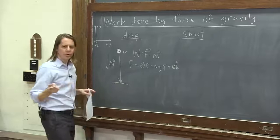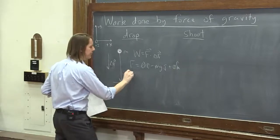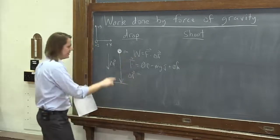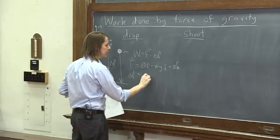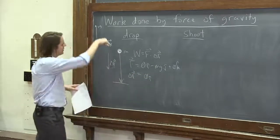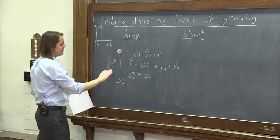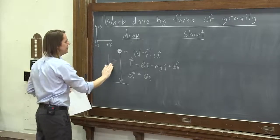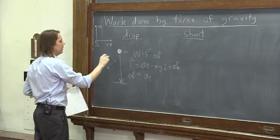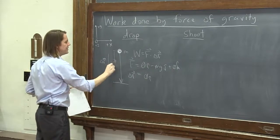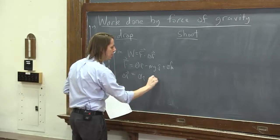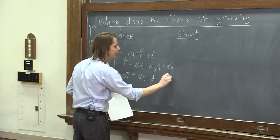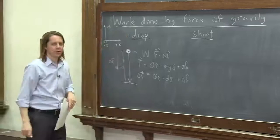And what is delta r, if we want to write it as a vector? Let's see, in the x direction it's 0 i-hat. And we dropped a distance d. I meant to say that's the displacement vector, but we dropped a distance d. So the displacement was negative d in the j-hat direction, and we didn't move in the k-hat direction.